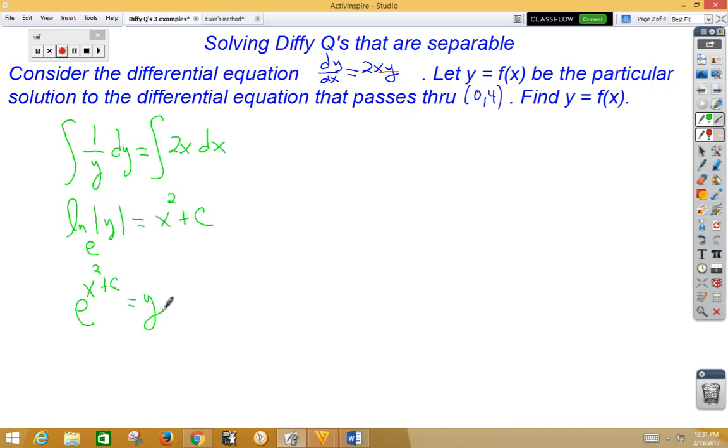Good old algebra 2. Then we can continue our algebra 2 by looking at the exponent. Addition means multiply, so we can rewrite that as e to the c times e to the x squared equals y.